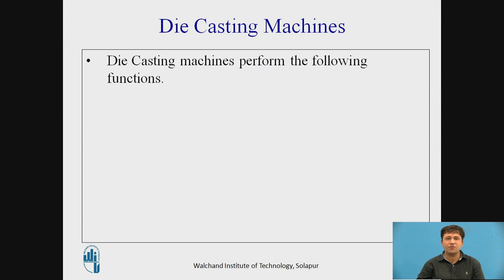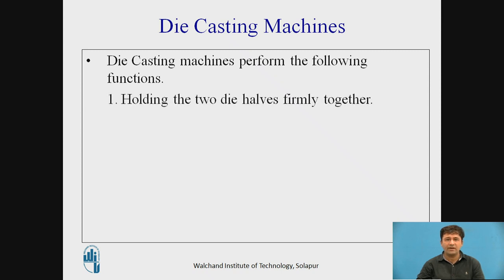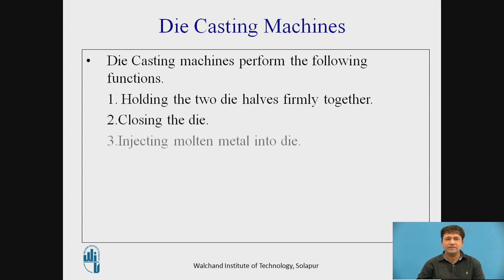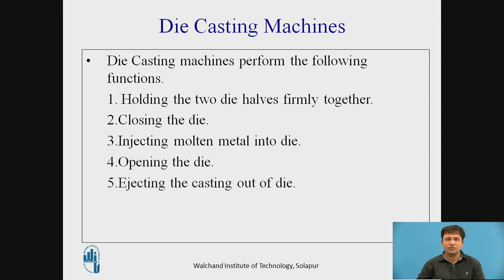Die Casting machines perform the following functions: holding the two Die halves firmly together, closing the Die, injecting molten metal into the Die, opening the Die, and ejecting the casting out of the Die. These are the basic steps performed with the help of Die Casting machines.